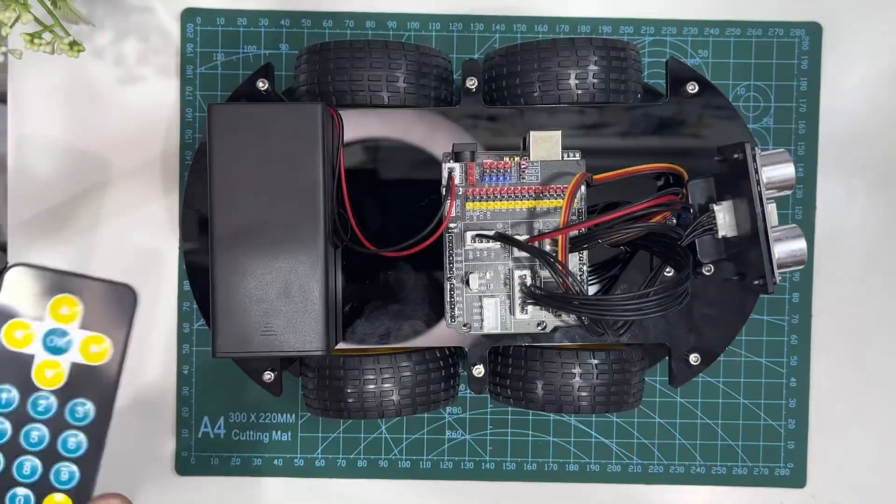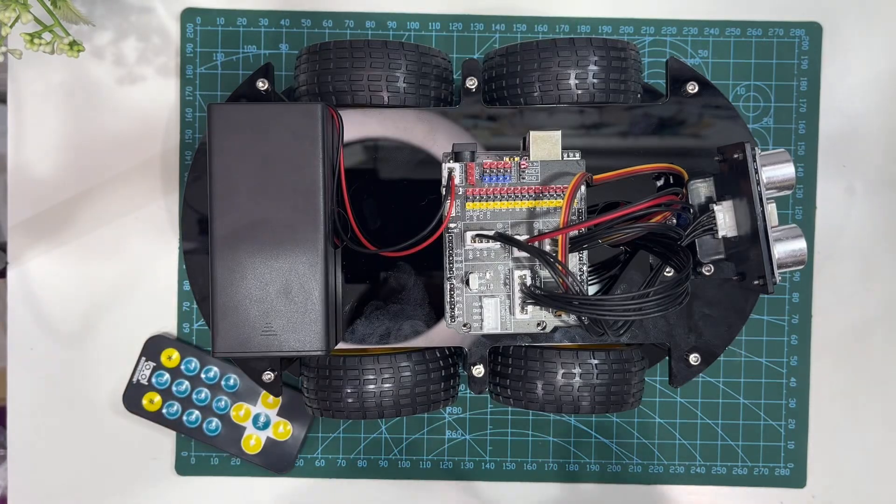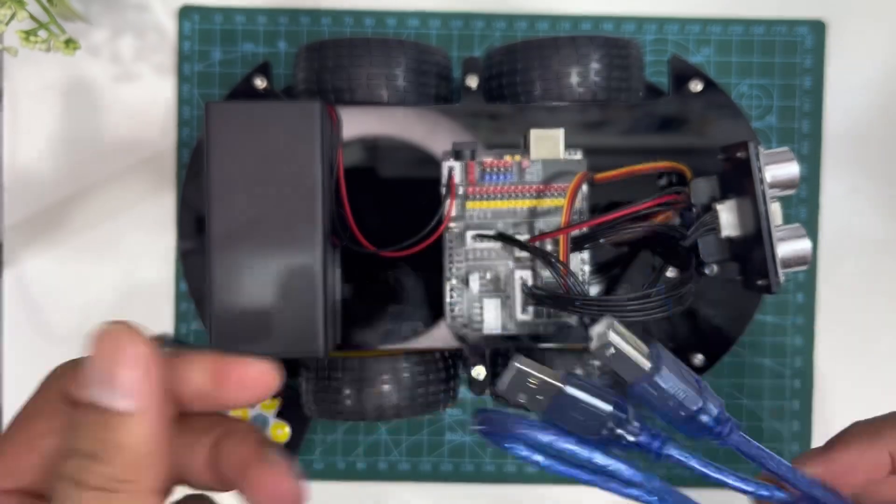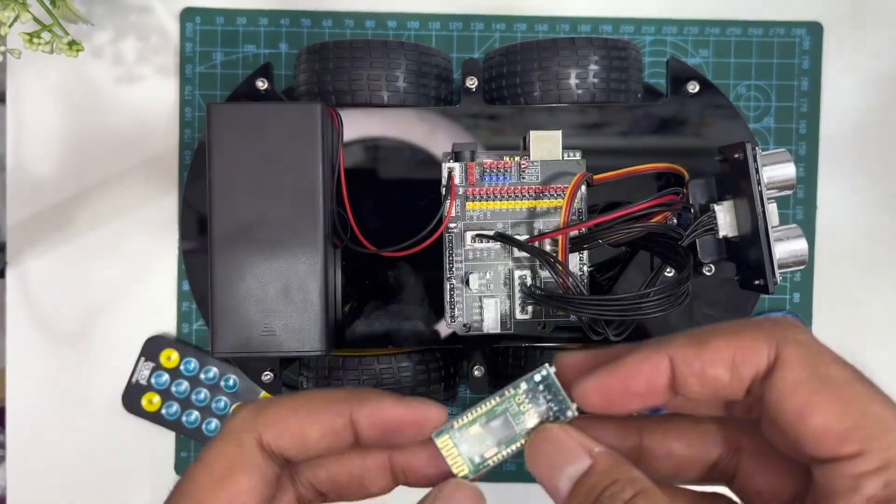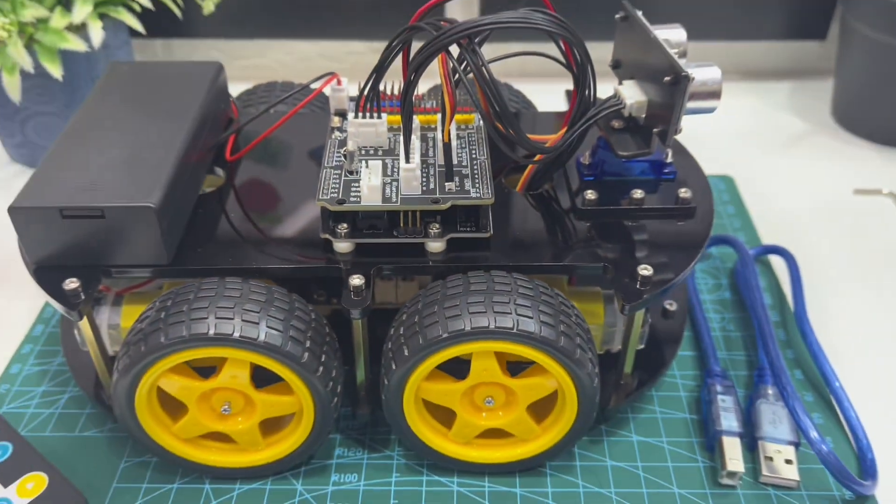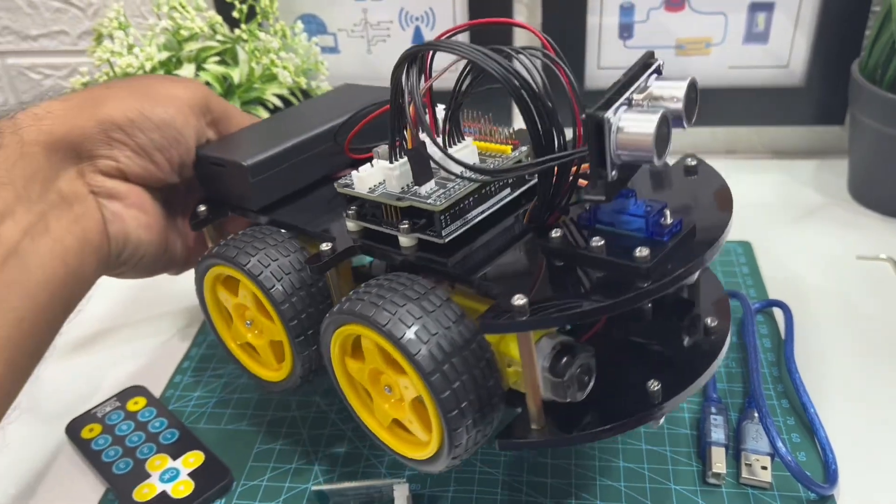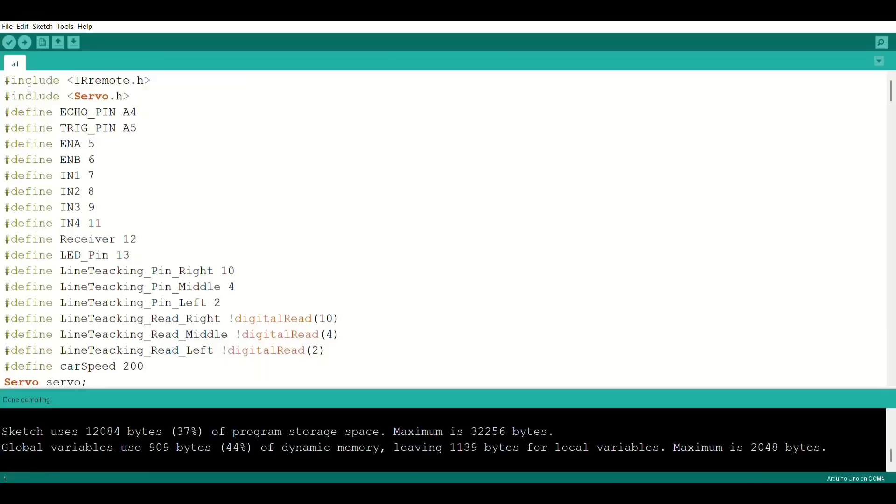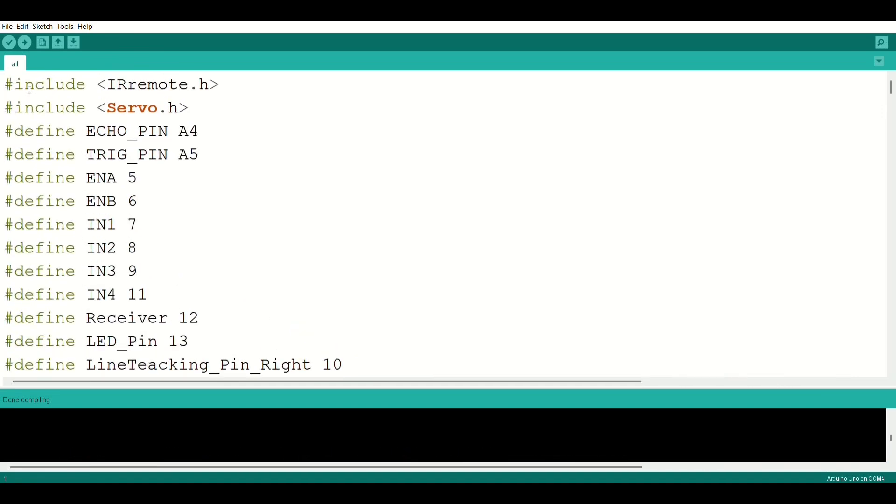With this IR remote we'll control our robot car. We need this Arduino cable for uploading the code. We'll connect the Bluetooth module after uploading the code. And there we have it, our robot car is fully assembled. We'll program and run it now. You'll find all the codes in the video description below.